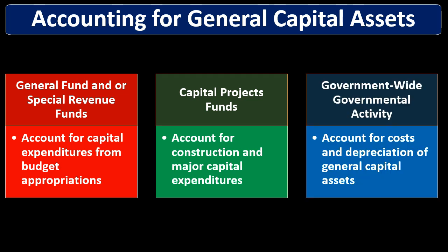At the government-wide governmental activity level, we think of the entity as a whole and account using the full accrual method. This is where we record the capital asset as an asset, and if depreciable, record accumulated depreciation and depreciation expense. Also note that in the general fund and special revenue funds, we may account for capital expenditures using appropriations — setting up budgetary accounts at the beginning of the period and then recording related encumbrances and expenditures when capital assets are purchased.